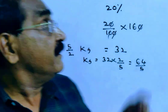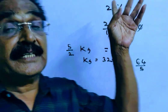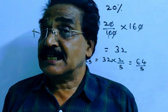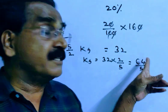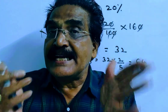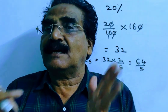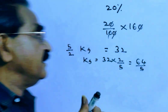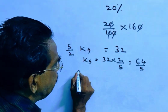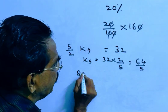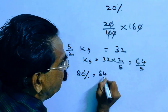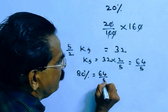The reduction is 20%, which means this 64/5 is 80% of the original price. So if 80% is equal to 64/5, then what is 100%? That means what is the original value of the sugar per kg?